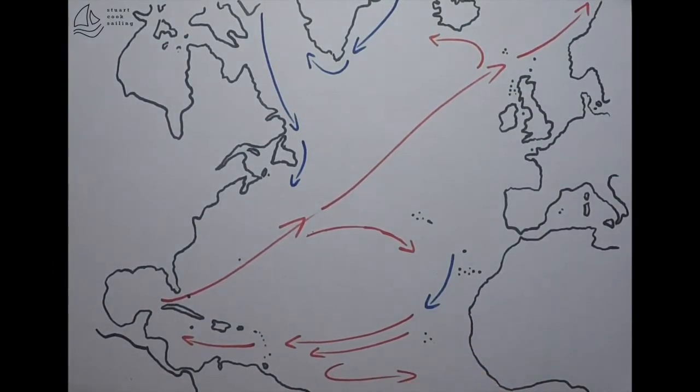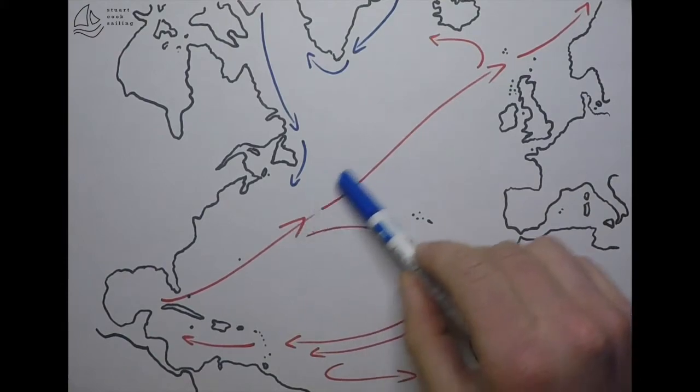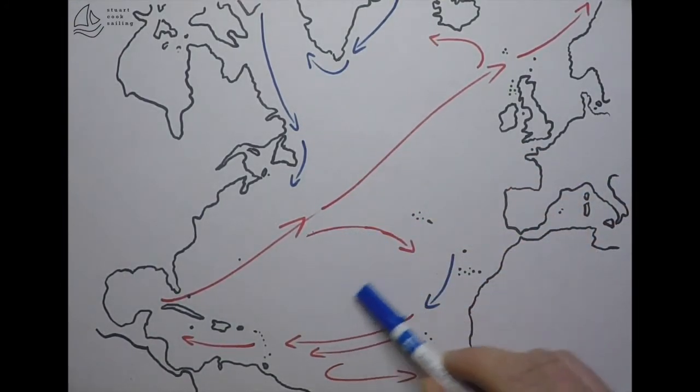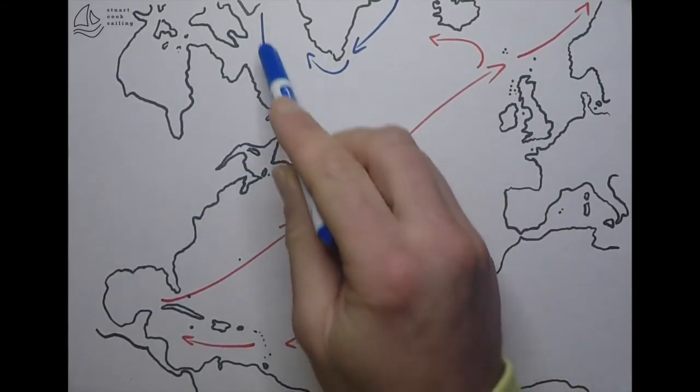The currents do tend to follow the surface winds. You've got your Azores High in here, your northeast trades, and that westerly airflow pushing across between the subtropical high and the polar low, which is helped to form by this.